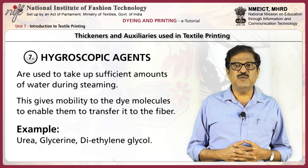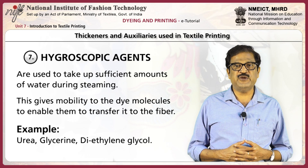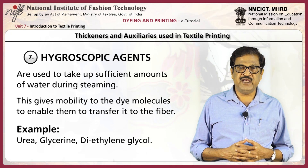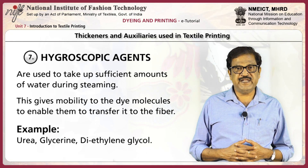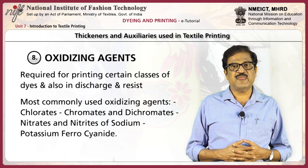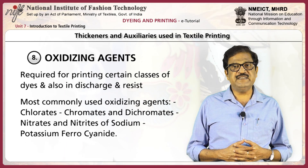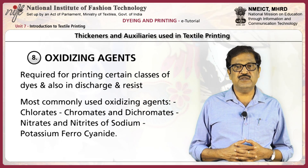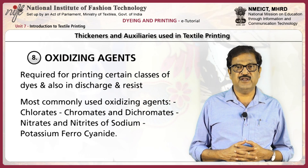Hygroscopic agents are used to take up sufficient amount of water during steaming. This gives mobility to the dye molecules to enable them to transfer into the fiber. Examples are urea, glycerin, and diethylene glycol.